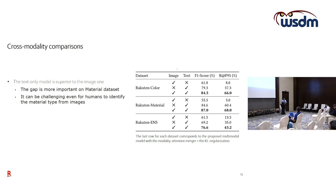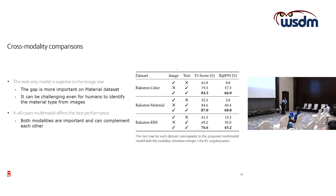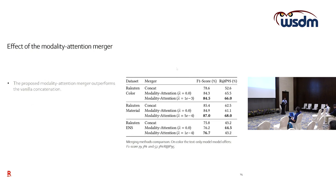The gap between text and image models is much larger on the material dataset, which is expected since extracting material from an image is very challenging — different materials can look the same. Importantly, in all cases our multimodal architecture offered the best performance, suggesting text and image information are complementary and not redundant. The modality attention merger also outperformed simple concatenation, which was a strong but simple baseline.